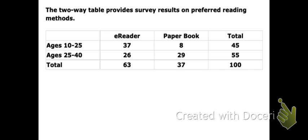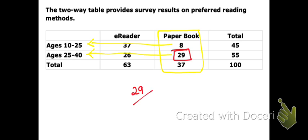Of those surveyed, do those that prefer a paper book — are the majority between the ages of 10 and 25 or between the ages of 25 and 40? Looking at the paper book column: 8 are between ages 10 and 25, and 29 are between ages 25 and 40. So the majority are between ages 25 and 40. We can also calculate percentages — 29 out of 100 total people prefer paper books and are in that age group, which is 29%.